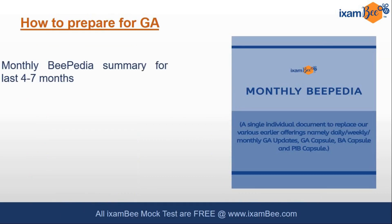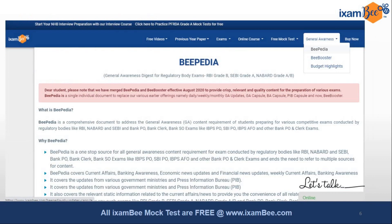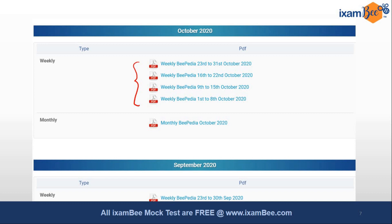My suggestion is to follow our monthly BPedia published by iExamB on our site. There is also a weekly BPedia, but since there are very few days left for the exam, I recommend going for the monthly BPedia. If you can cover more than six months, that's great; otherwise at least three to four months is a must. It's not only important to read the content but also to retain it. To download the monthly BPedia — which is absolutely free — visit iexamb.com, go to the General Awareness section in the right corner, and click on BPedia. You can see the monthly BPedia for October, September, and other months.